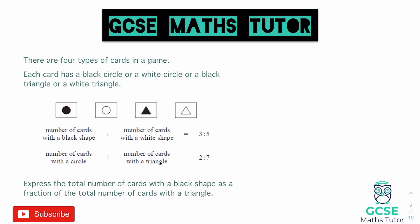Okay, so to start with let's just have a read of this question. So it says there are four types of cards in a game. Each card has a black circle or a white circle or a black triangle or a white triangle. And then it gives us some ratios. So the number of black shapes to white shapes is three to five and the number of circles to triangles is two to seven. Express the total number of cards with black shapes as a fraction of the total number of cards with a triangle.